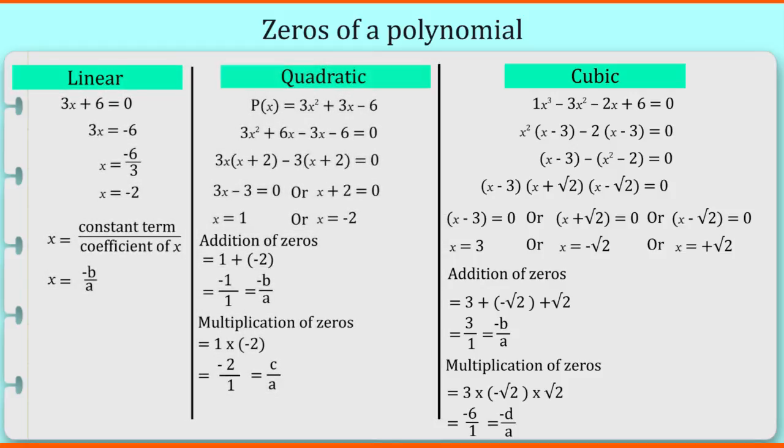So friends, these were the relations of zeros with the coefficients. Keep in mind that the number of zeros are dependent upon the degree of a polynomial such as linear polynomial will have only one zero. A quadratic polynomial has two zeros and the cubic polynomial has maximum three zeros.